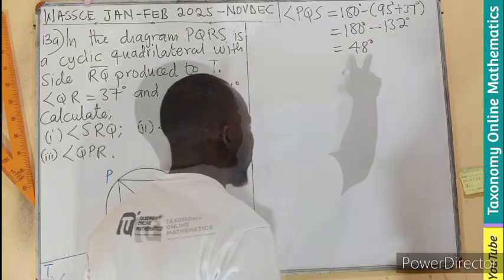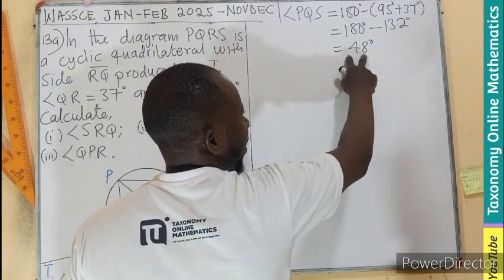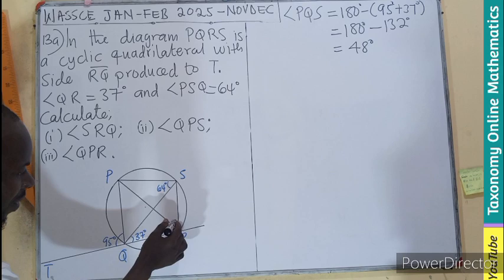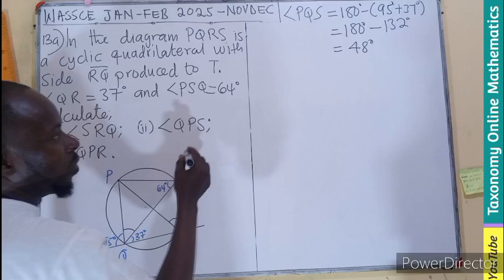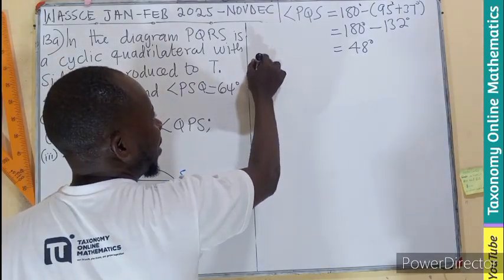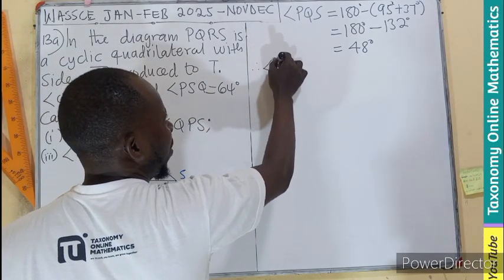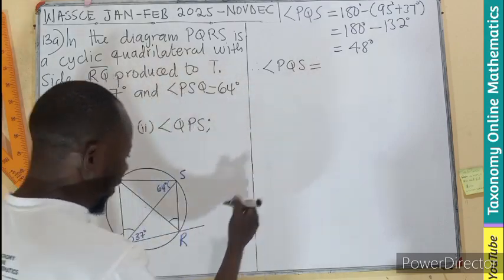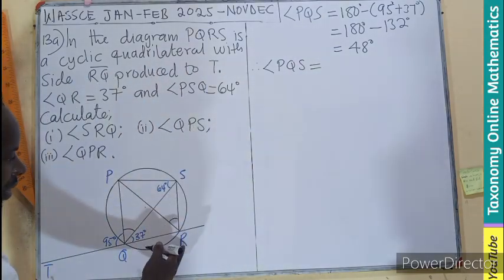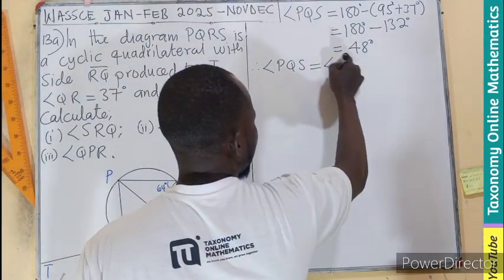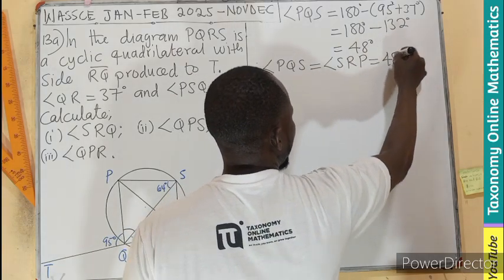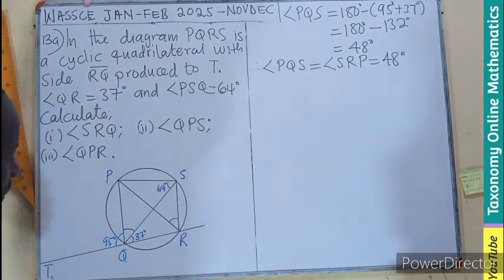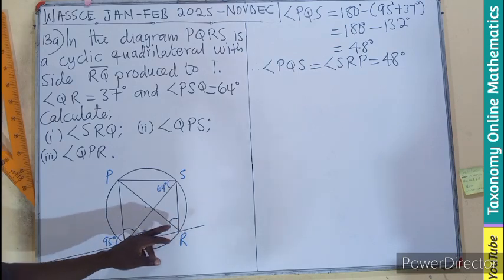Now that we know this angle, the angle here is going to be the same. Therefore, angle PQS equals angle SRP, which equals 48°.